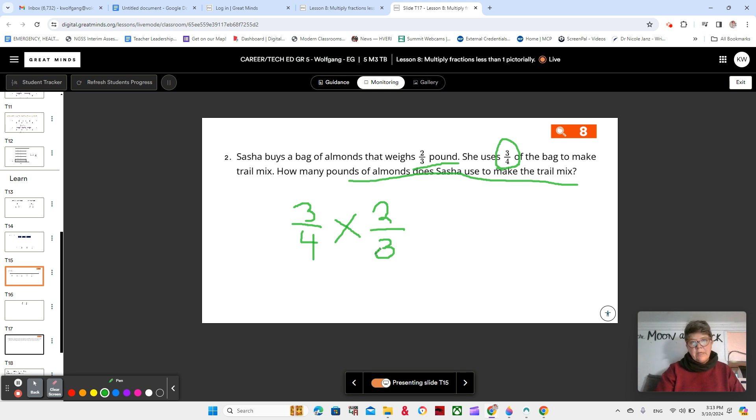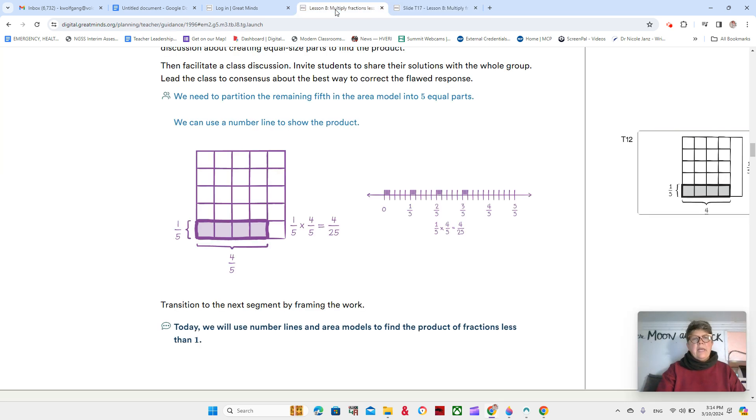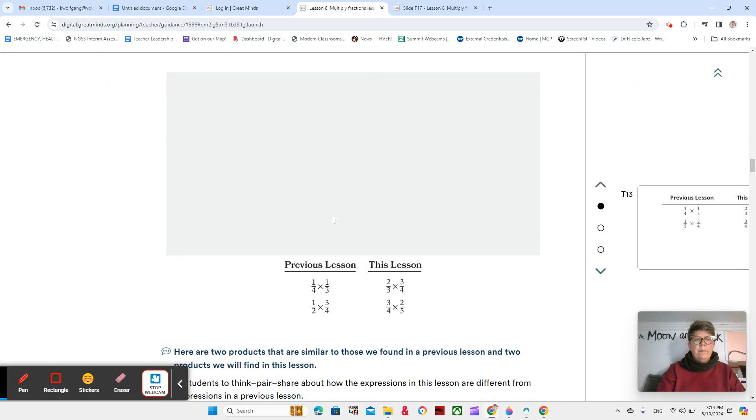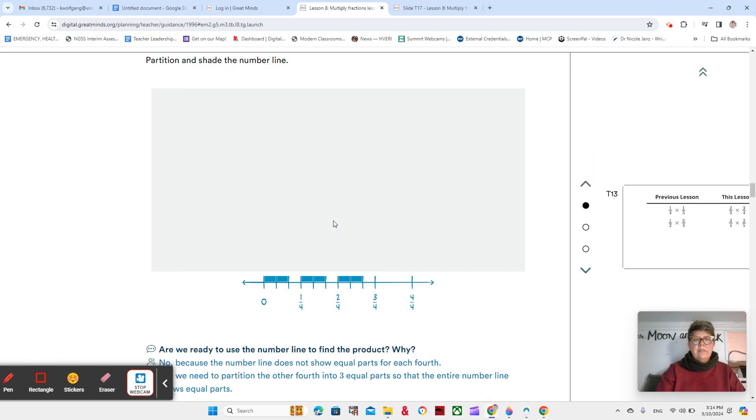Now you could use an area model. You could use a number line. You could use either of them to show your understanding, but you do need to show it in one of those ways, not just multiply straight across. Because remember that in this lesson, we are showing the understanding of it so that we're really getting the deep understanding of what it means. And I'll show you, let's get to it here.